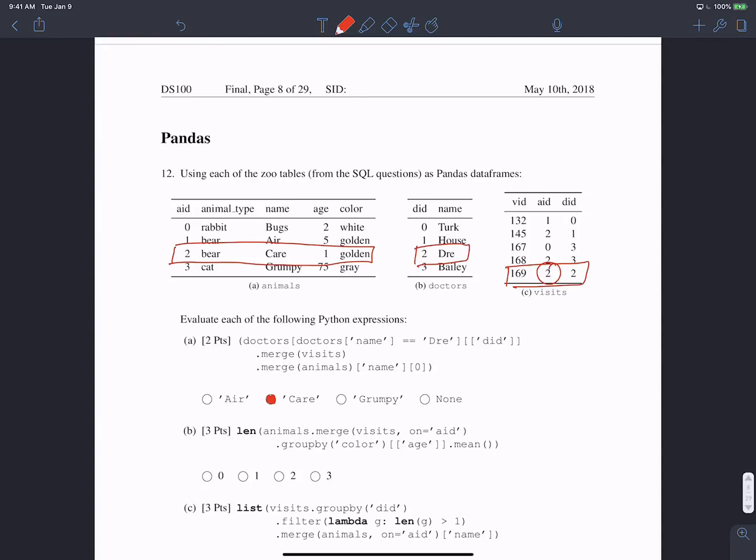Again, why there's only one row? Well, that's because when we merge doctors with visits where the doctor's name is Dre, there's only one match between doctor ID being equal to two between the two tables. That's just when doctor ID equals two, which is the last row of visits. Then we merge that with animals, there's only one instance in the animals table where the animal ID equals two. So that's how we get the result is care.